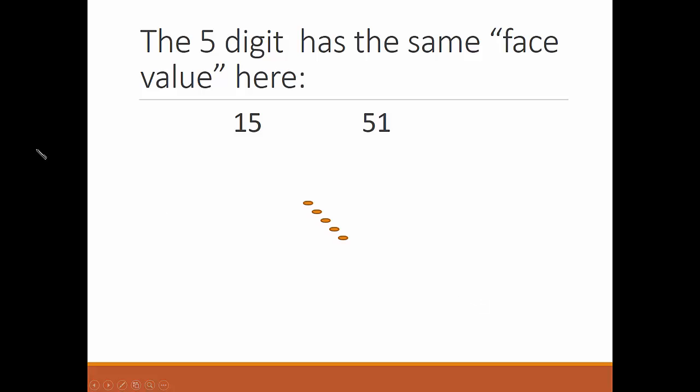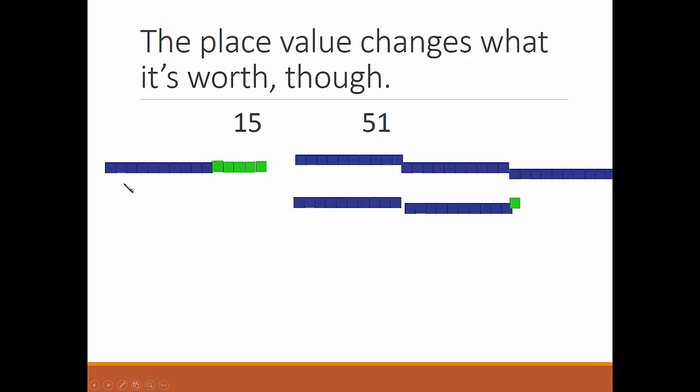The five digit has the same face value here and here. There are five of something in each number, but the place value changes what it's worth. Fifteen blocks is a lot smaller than fifty-one blocks.